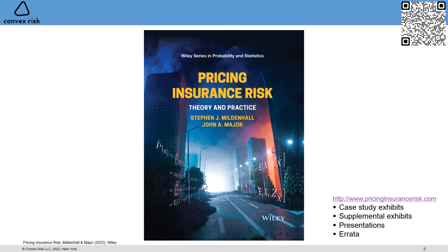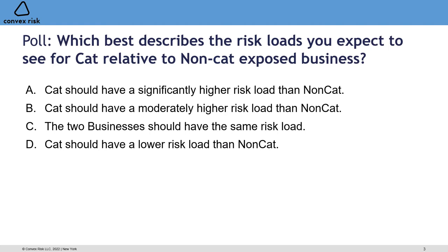Management and actuaries struggle to find a good answer to the cat question. Consider this poll question: which best describes the risk loads you expect to see for cat relative to non-cat exposed business? Should cat have a significantly higher risk load, a moderately higher risk load, about the same risk load, or actually a lower risk load than non-cat? My expectation would be that most people would say A or B — significantly or moderately higher — and that would be the conventional wisdom among practicing actuaries.